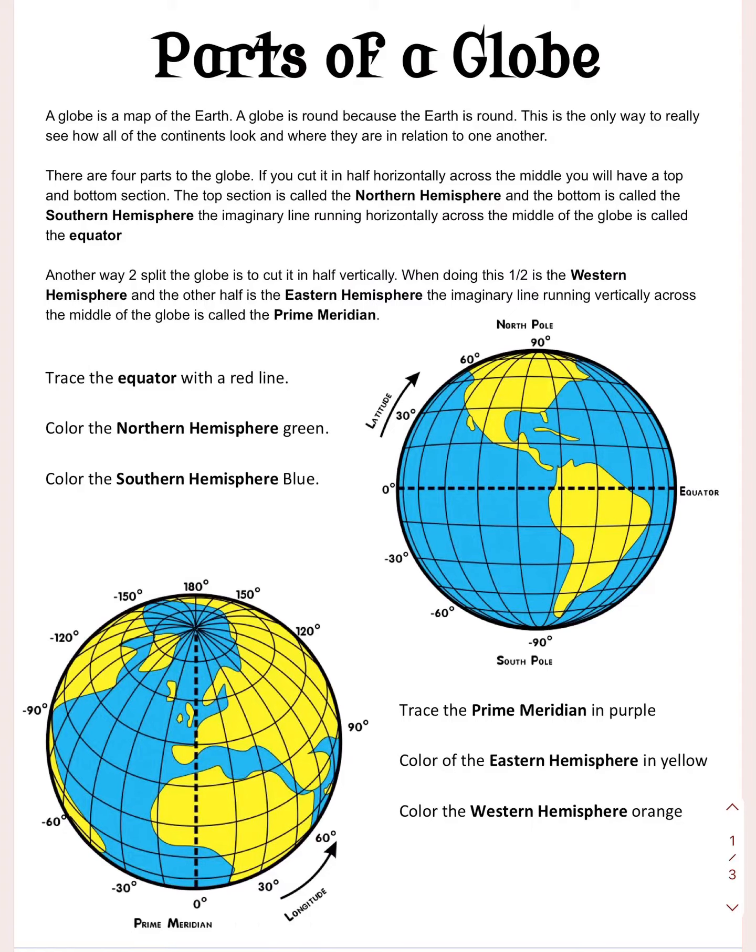There are four parts of the globe. If you cut the globe in half horizontally across the middle, you get a top half and a bottom half. We call the top half the northern hemisphere and the bottom half the southern hemisphere. There's this imaginary line through the middle that we call the equator.